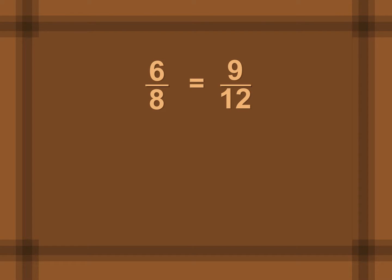A proportion looks like this: 6 to 8 is equal to 9 to 12. So when you have two ratios that are equal to each other, you have a couple of properties that are true.